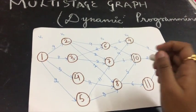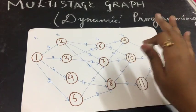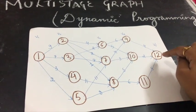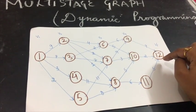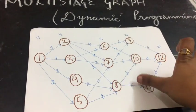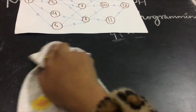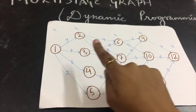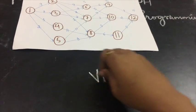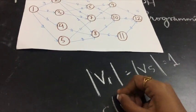Here I have K equal to 5, so I have 5 stages. This is my source vertex with in-degree 0, represented by S, and this is my sink vertex, represented by T, with out-degree 0. We have to reach from source to sink using the minimum cost path. Two things to keep in mind: V(1) equals V(5) equals 1.